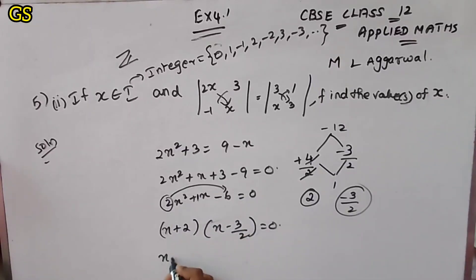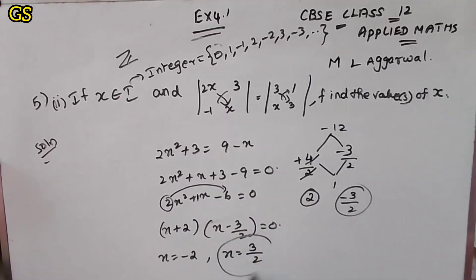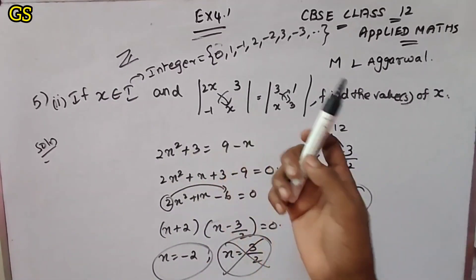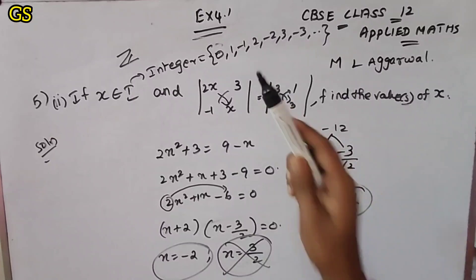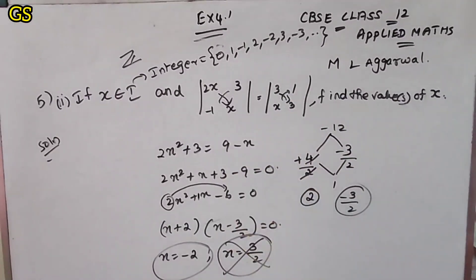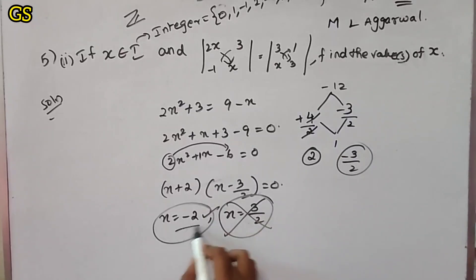So there are 2 answers: x = +2 and x = −3/2. Now, x = −3/2 is not possible because the question says x belongs to integers. Integers are whole numbers like 0, 1, −1, 2, −2. But −3/2 is a fraction — a rational number — not an integer. So x = +2 is the valid answer. Thank you.